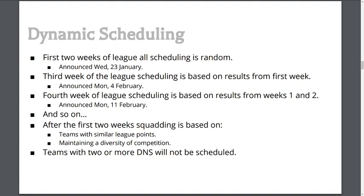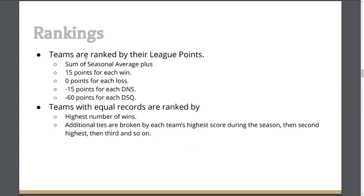Rankings are determined by what we call League Points, based on your team's seasonal average plus bonus points for each win. This year it is 15 points for each win, zero points for a loss, with penalties for a DNS (did not start) and an even stiffer penalty for disqualification — which happens if a team cheats. If two teams are tied with the same number of league points, we have tie-breaking rules built into the league program.